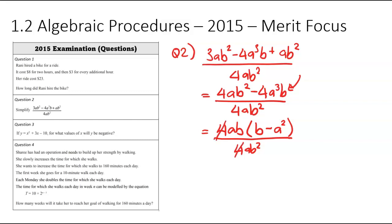And all of that is over 4AB². Now the four is going to cancel, the A is going to cancel, and the B is going to cancel at one, leaving one of the B's on the bottom. So my final simplified answer is going to be B minus A² over B.